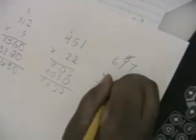1 times 7 equals 7. 1 times 1 equals 1. 1 times 6 equals 6.